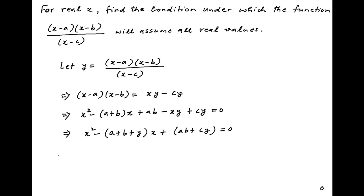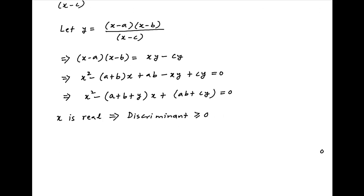Now x is a real number, therefore the discriminant of this quadratic equation must be greater than or equal to 0. This implies that (a + b + y)² - 4(ab + cy) ≥ 0.